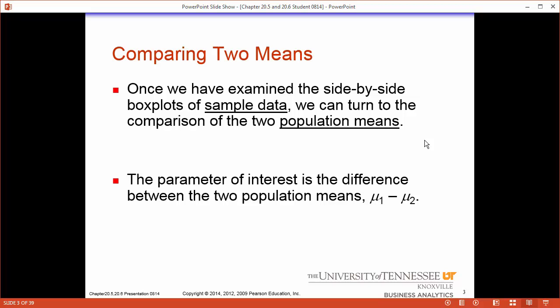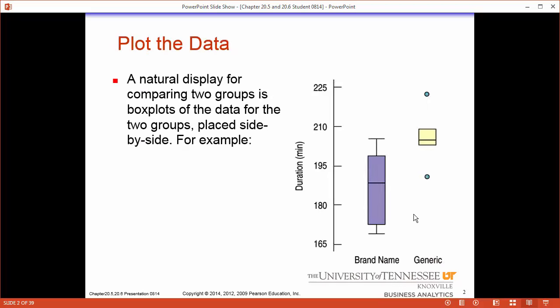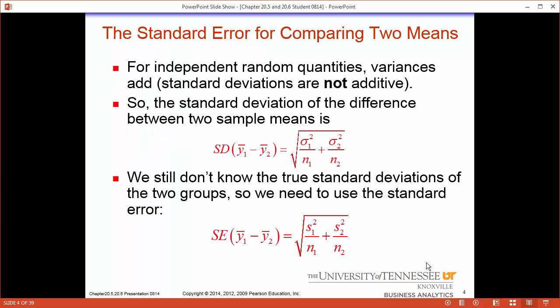Our true parameter of interest is the difference between mean one and mean two. This would be the true difference between the brand name's mean and the generic's mean. We are interested in the true difference between the means, and our best way of looking into this is to look at the sample difference. If we had the true standard deviation we could get the standard deviation for the difference between the means, requiring the true standard deviation for sample one and sample two. In many cases we still don't have the true standard deviation so we have to use the sample standard deviation.